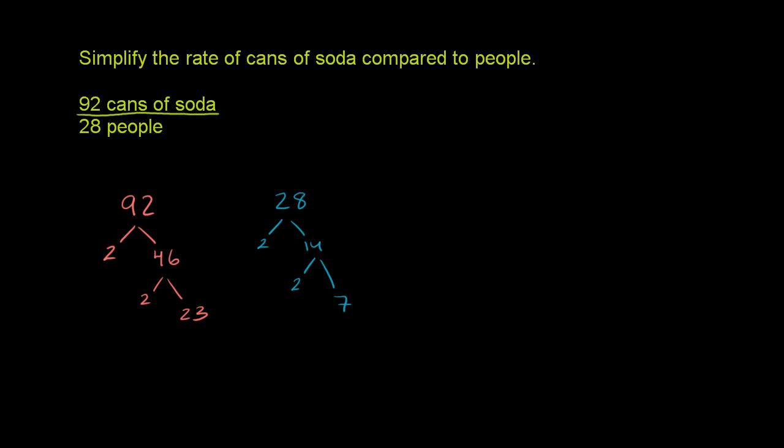So we could rewrite the 92 cans of soda as 2 times 2 times 23 cans of soda for every 2 times 2 times 7 people.